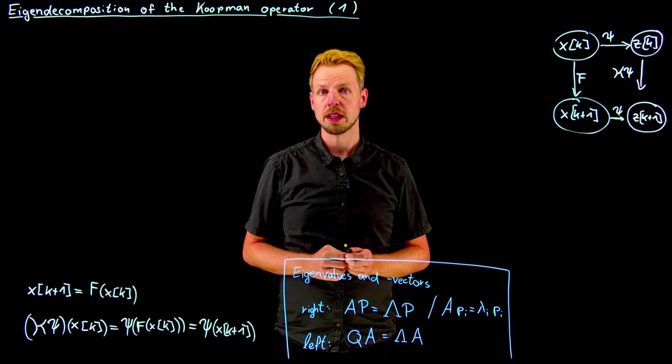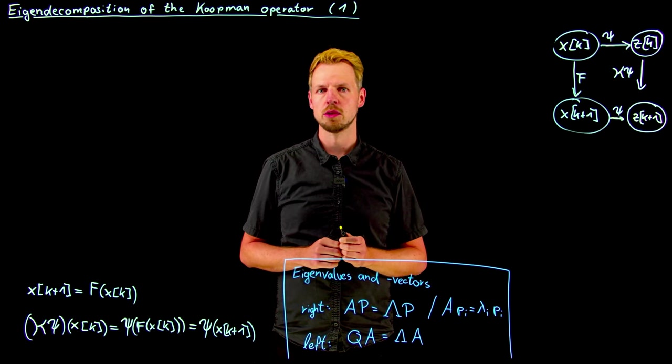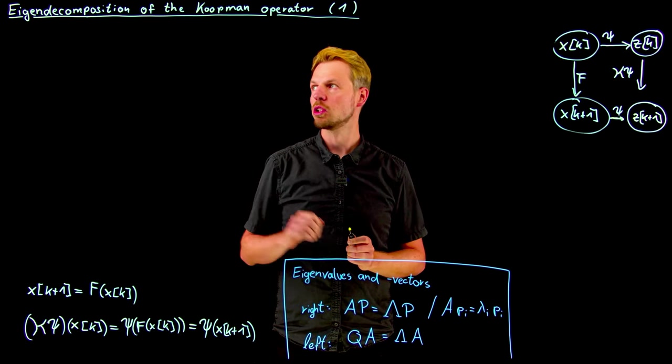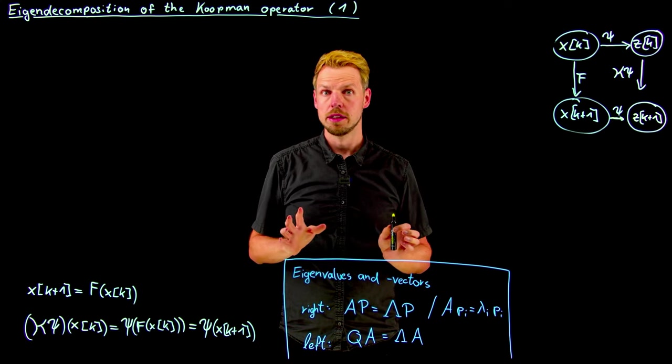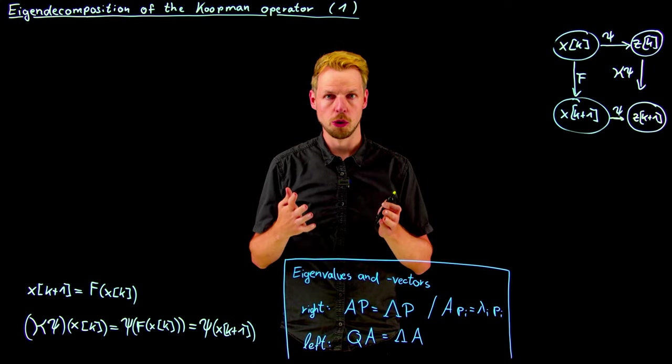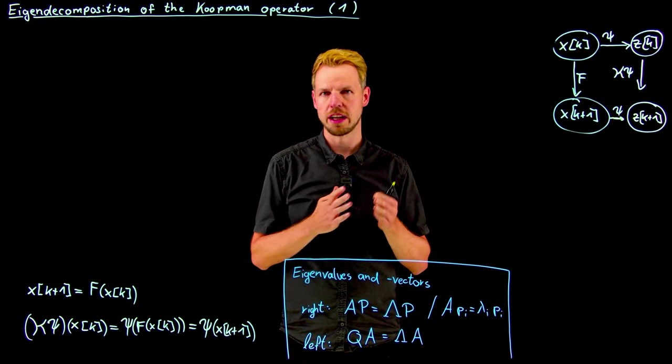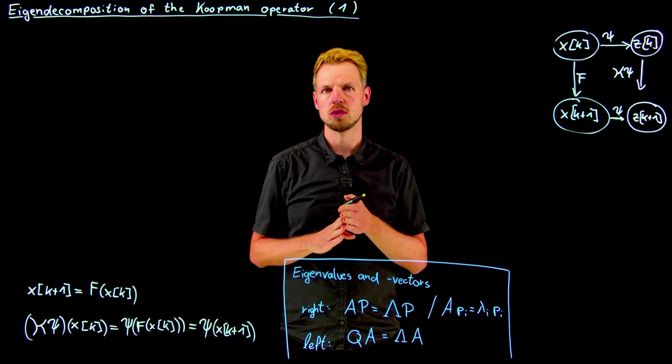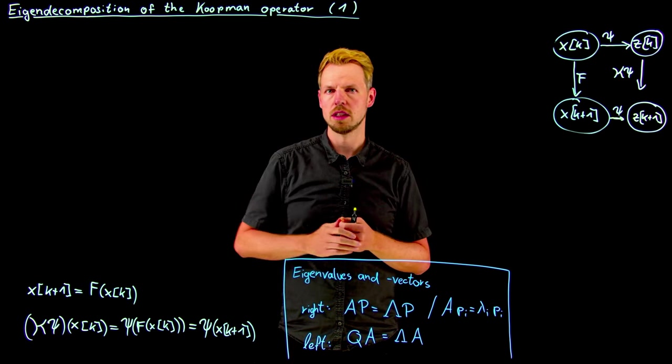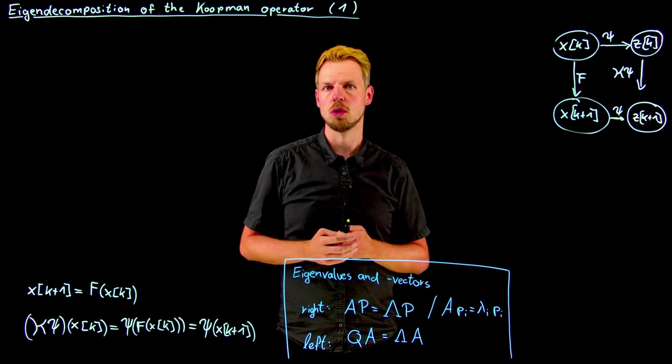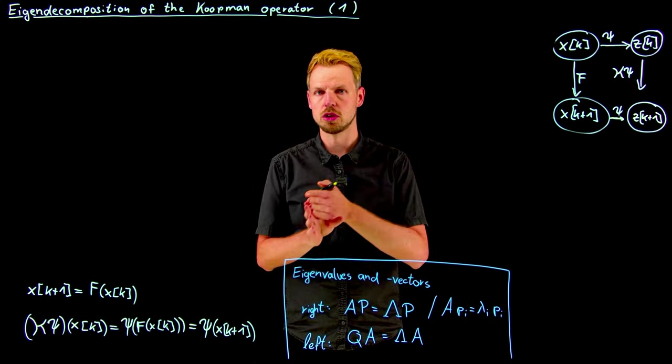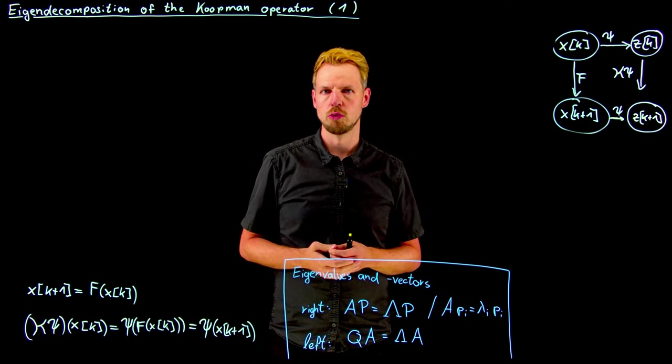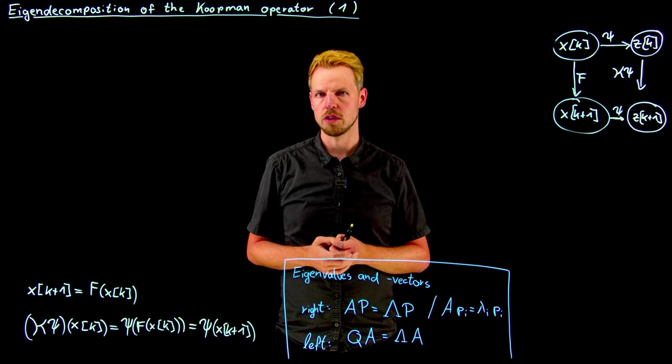Hey everyone and welcome back to part 2 of our lecture series on the Koopman operator, which is going to be about the eigendecomposition of this operator. This means that we want to decompose it into a set of eigenfunctions, eigenvalues and the associated modes, or later called Koopman modes, that determine the relative importance of each of these functions when it comes to reconstructing the state of the system.